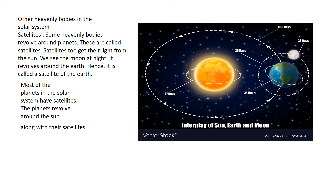Now we will see what are satellites. Some heavenly bodies revolve around the planets — they are called satellites. Satellites also get their light from the sun. The moon revolves around the earth, so it is called a satellite of the earth. Most planets in the solar system have satellites, and the planets revolve around the sun along with their satellites.